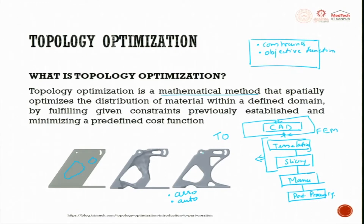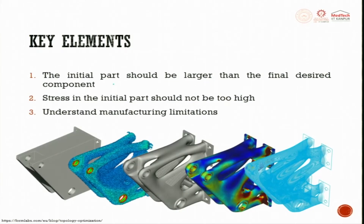Constraints such as mounting holes are maintained throughout. Material is only removed where it doesn't contribute. At areas where a load component acts, the material is strengthened. Key considerations: the initial part should be larger than the final desired component, stress in the initial part should not be too high, and manufacturing limitations must be understood.